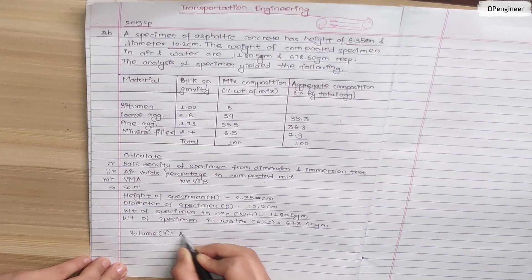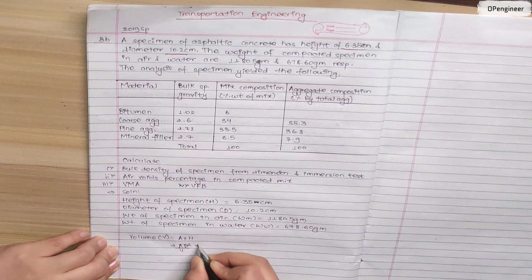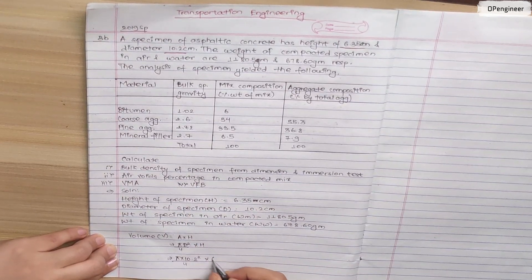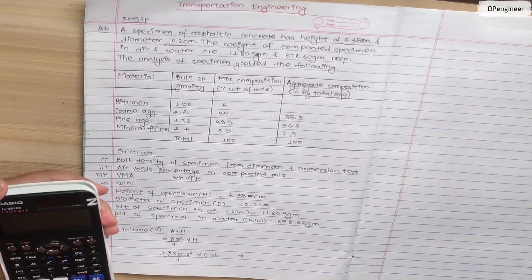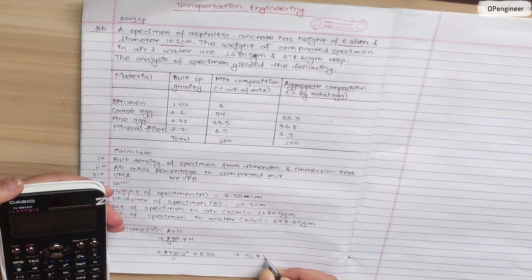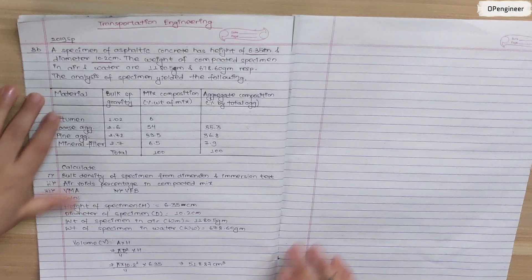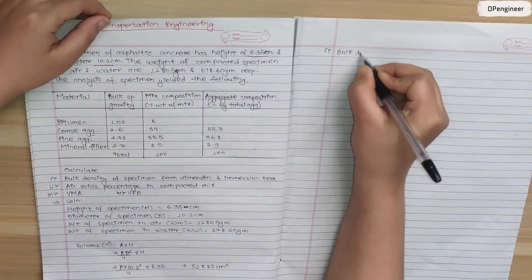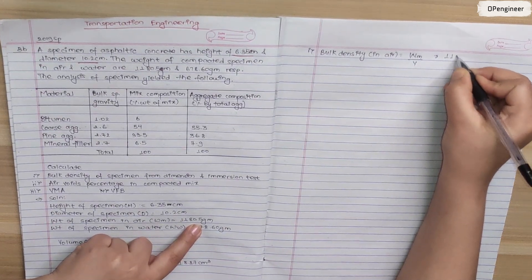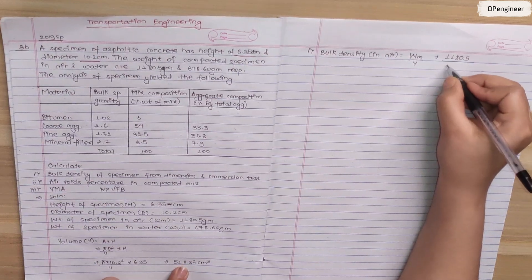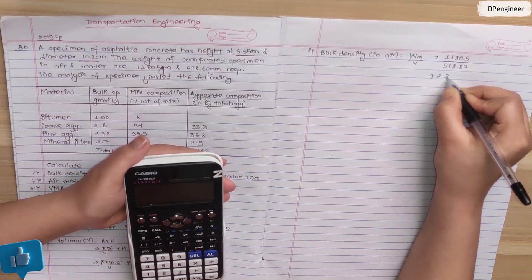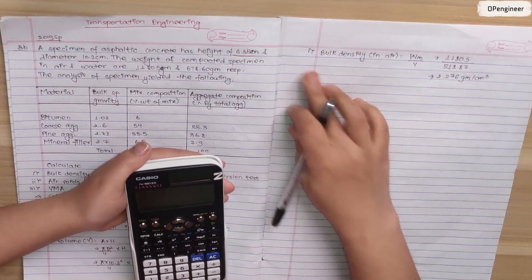The weight of specimen in water is 678.60 grams. Volume is calculated as pi divided by 4, times diameter squared times height: (pi/4) × (10.2)² × 6.35, giving a volume of 518.87 cm³. Bulk density in air is calculated as weight divided by volume: 1180.5 / 518.87 = 2.276 g/cm³.